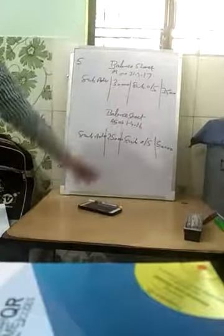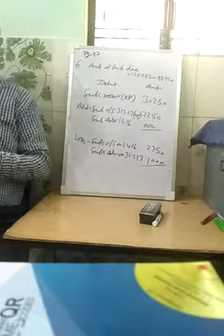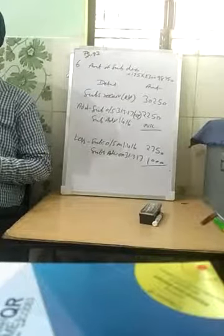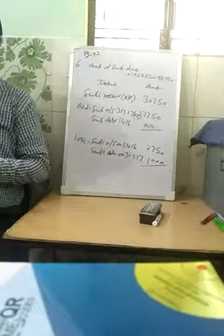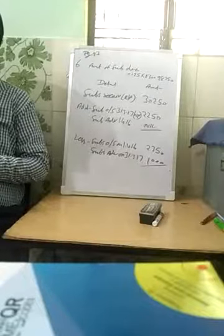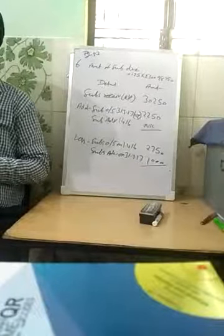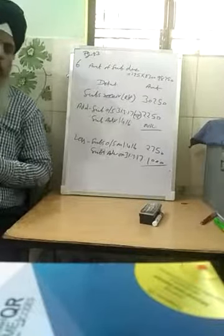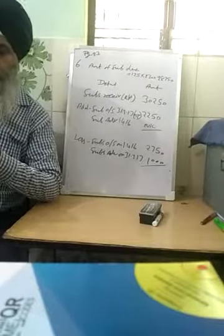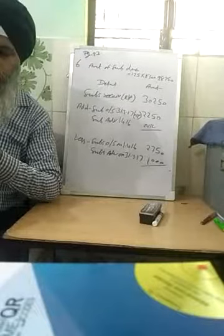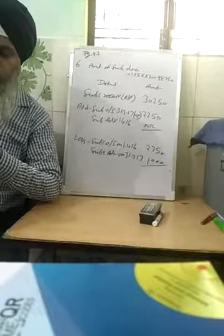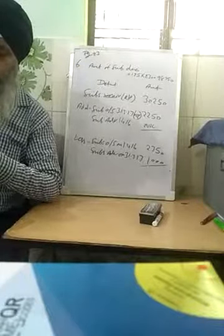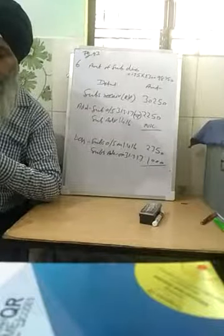We have completed question number 5, page number 22. Now we start question number 6 from NCERT page number 23. Extract of receipt payment account for the year ended 31st March 2017: subscriptions received — Rs. 2,500, Rs. 26,750, Rs. 1,000 — total Rs. 30,250. Adjustments: total number of members 230, annual subscription fee Rs. 125, subscription outstanding on 1st April 2016 Rs. 2,750.